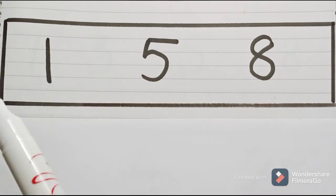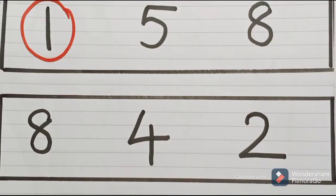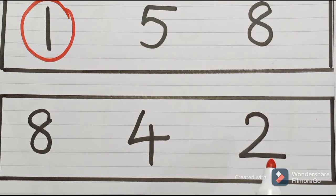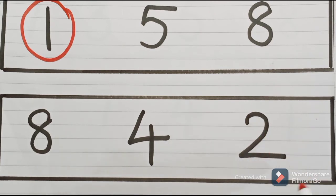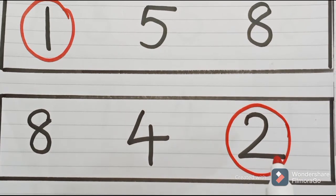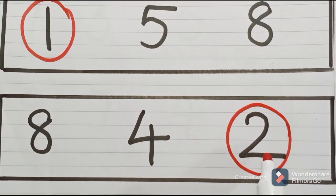1 is the smallest number here — circle this number. In the next row we have numbers 8, 4, and 2. The smallest number is 2, the number which comes earlier, so we circle 2. After 2, 4 comes; after 4, 8 comes. So 8 is the biggest number and 2 is the smallest number here.